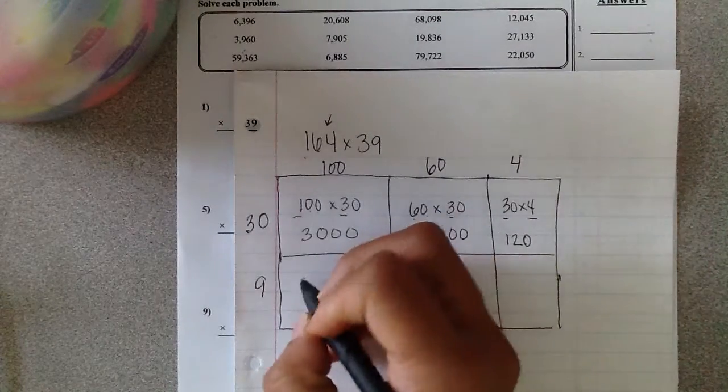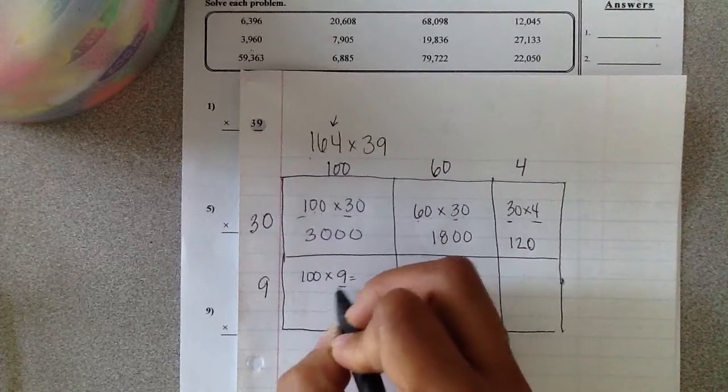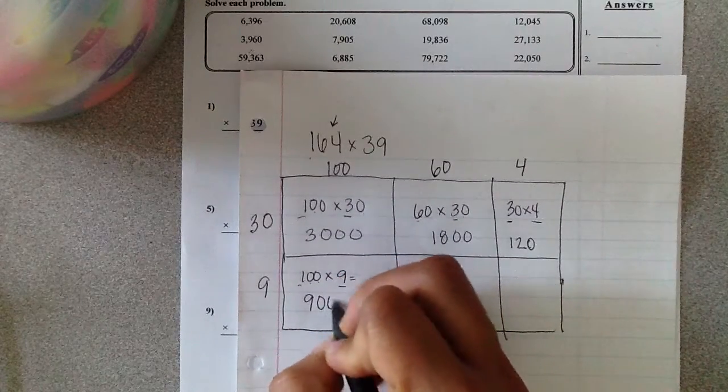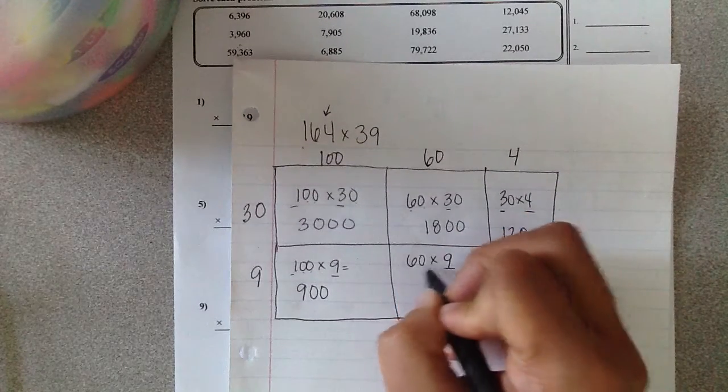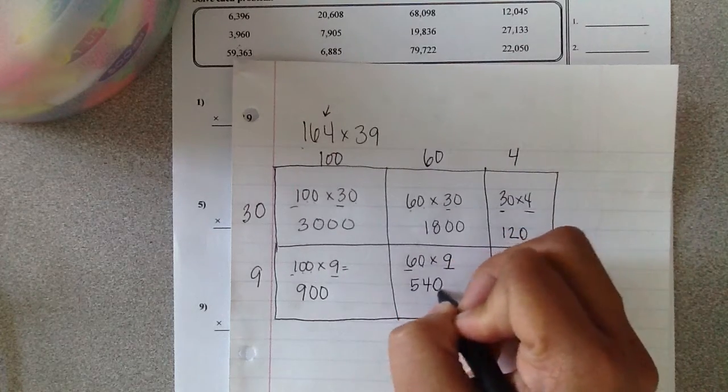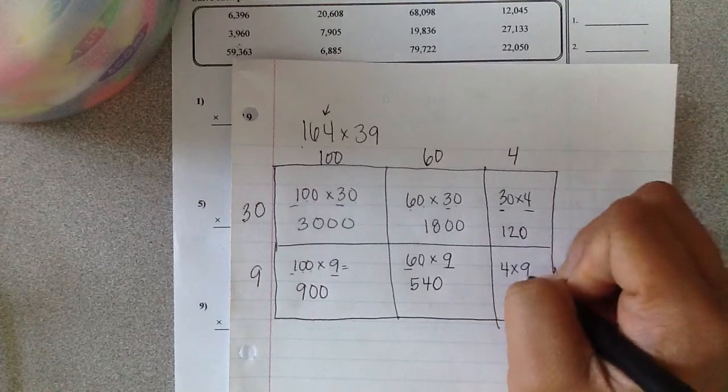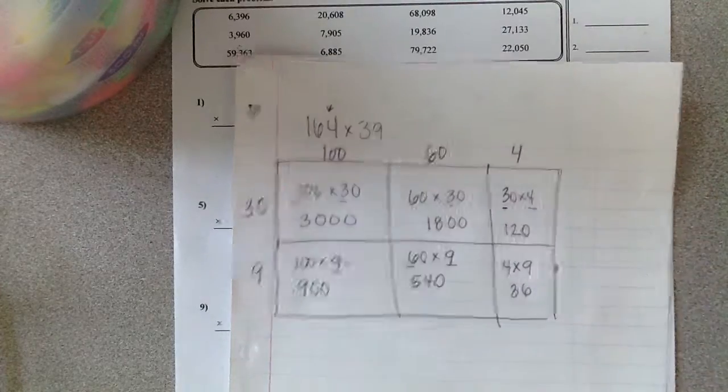Here I have 100 times 9. 9 times 1 is 9, and my two zeros for my factors right there. 60 times 9 goes here. 9 times 6 is 54. Add one more zero. I have a zero there. And then 4 times 9 is 36, so I'm going to put that there.